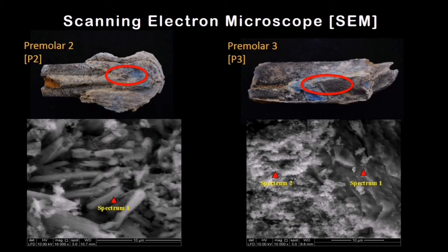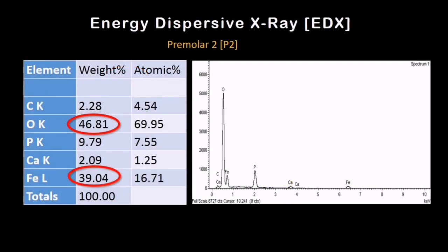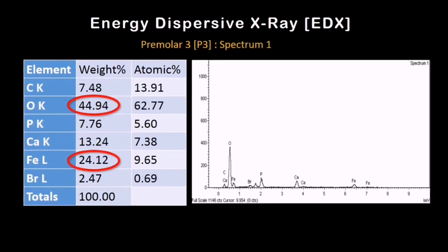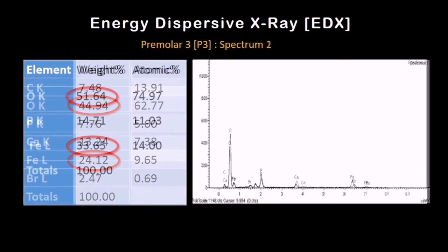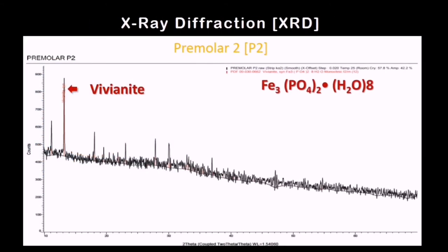The EDX shows that two elements were discovered in abundance: the oxide and the ferrum, for both Primola 2 and Primola 3. You can see the oxide and ferrum make up the most for both Spectrum 1 and Spectrum 2. Under XRD it was confirmed that these two elements make up a composite called vivianite — you can see the formulation there.